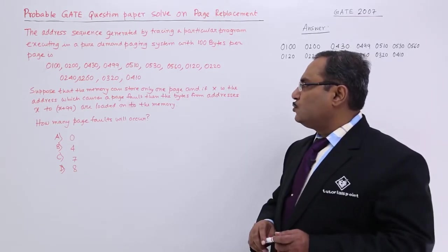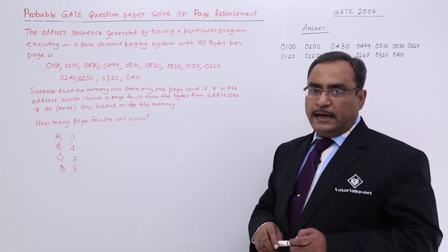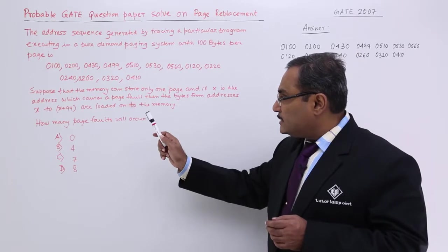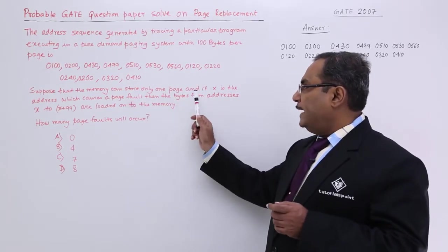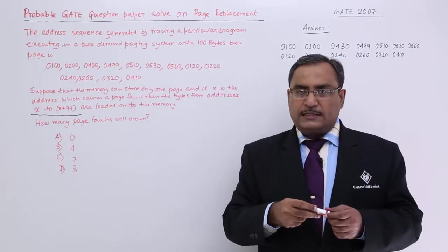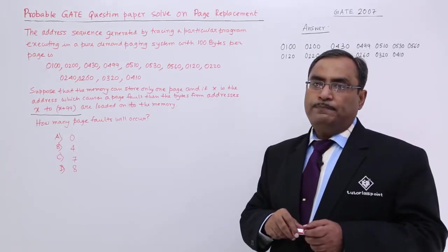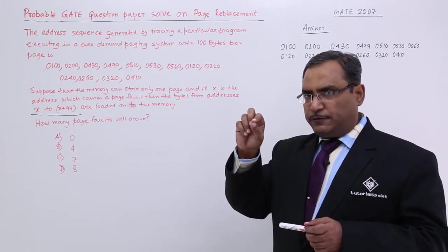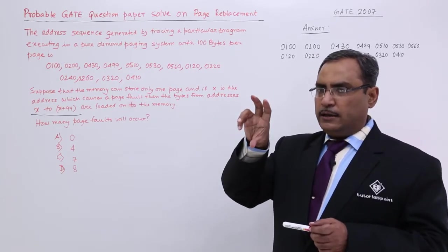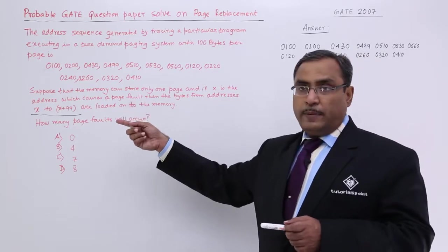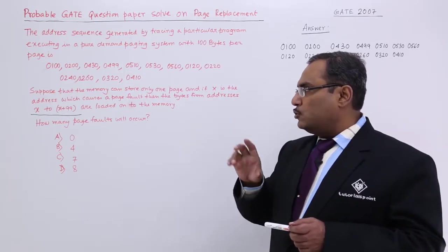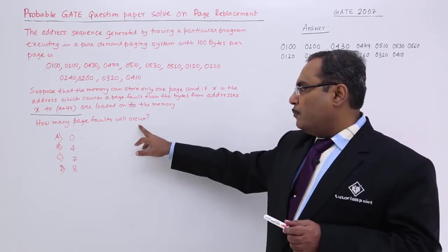Suppose that the memory can store only one page at a time. That means number of frames will be equal to 1. And if x is the address which causes a page fault, then the bytes from the address x to x plus 99 are loaded onto the memory. How many page faults will occur?